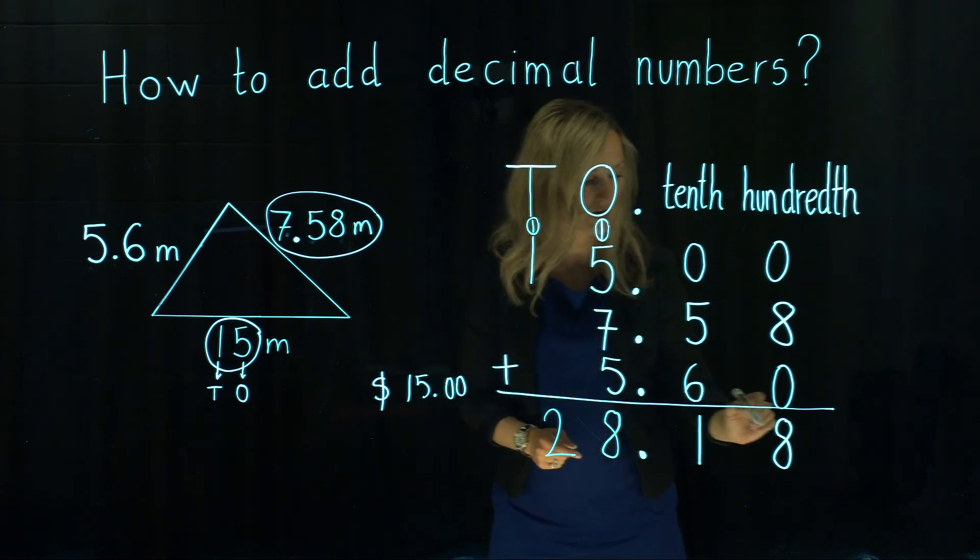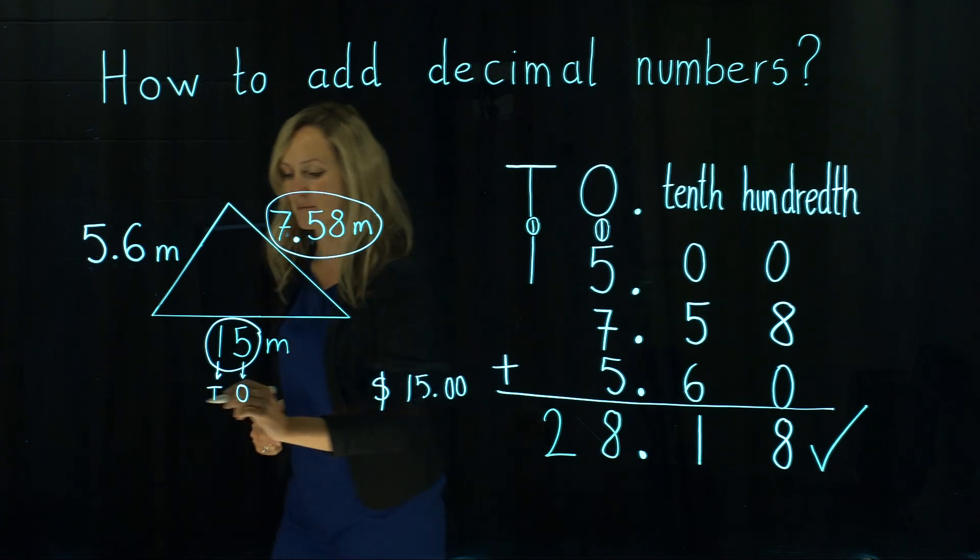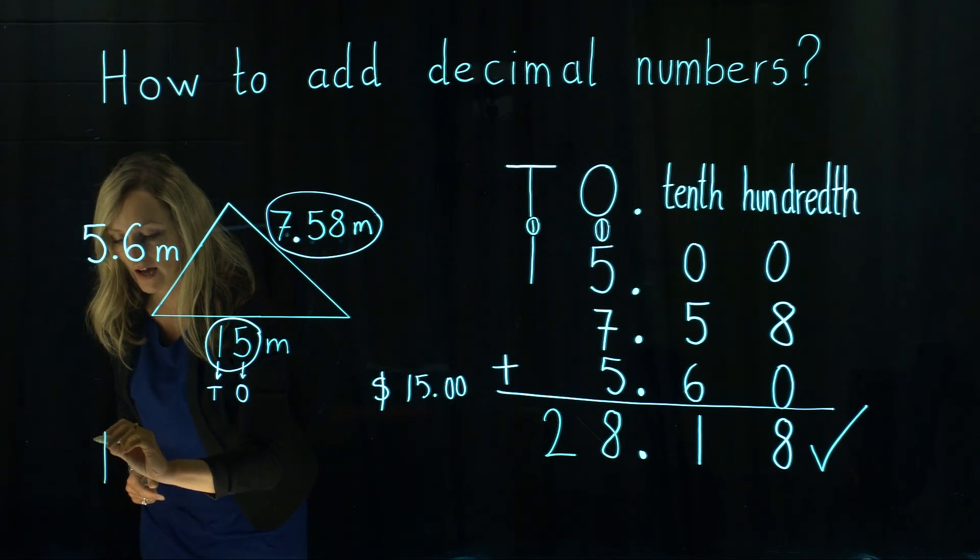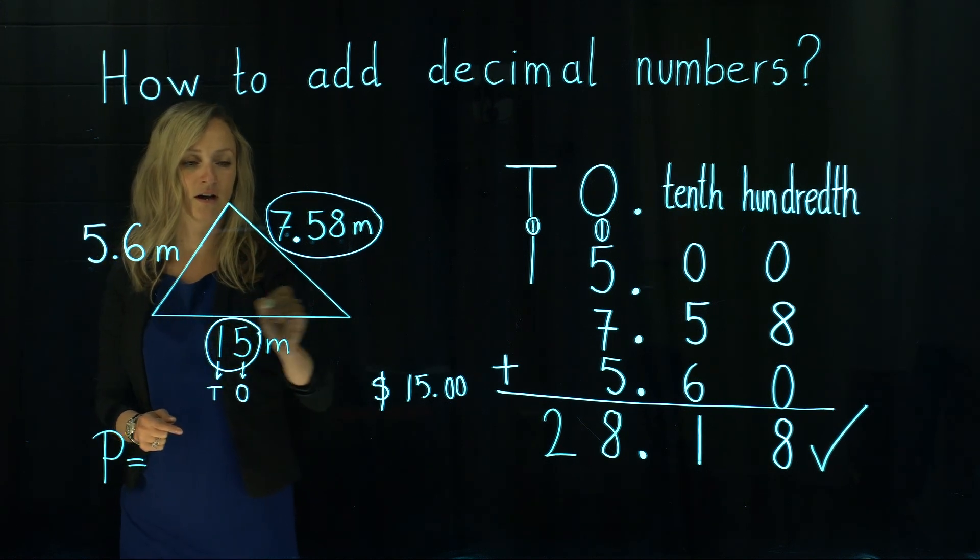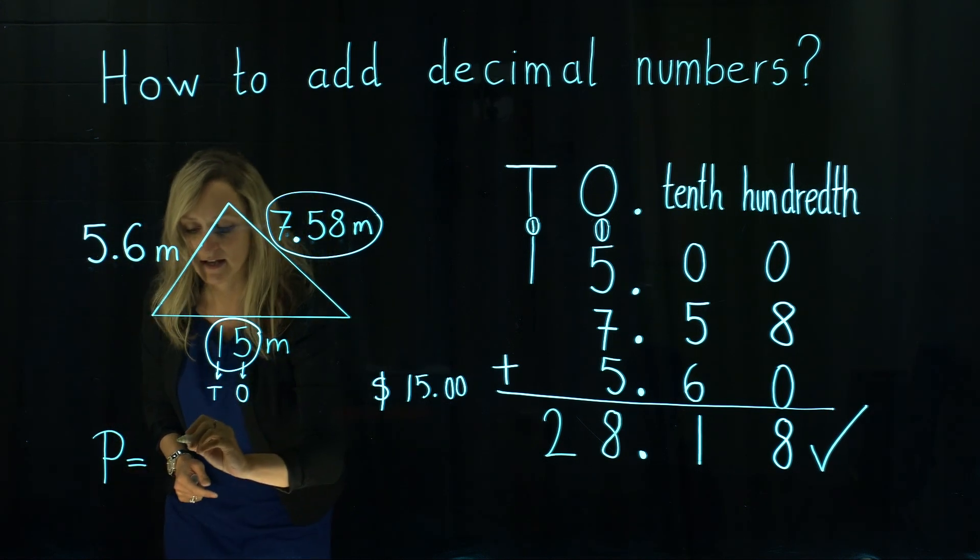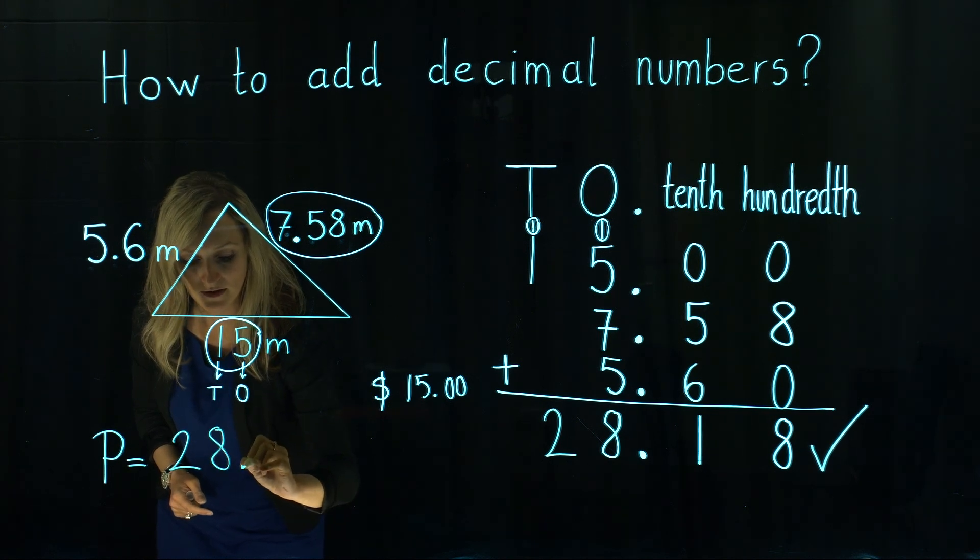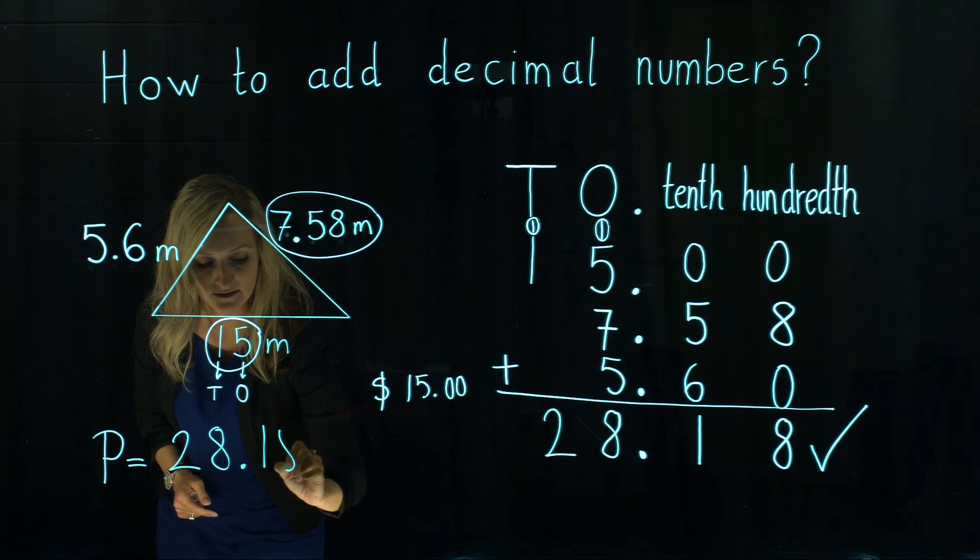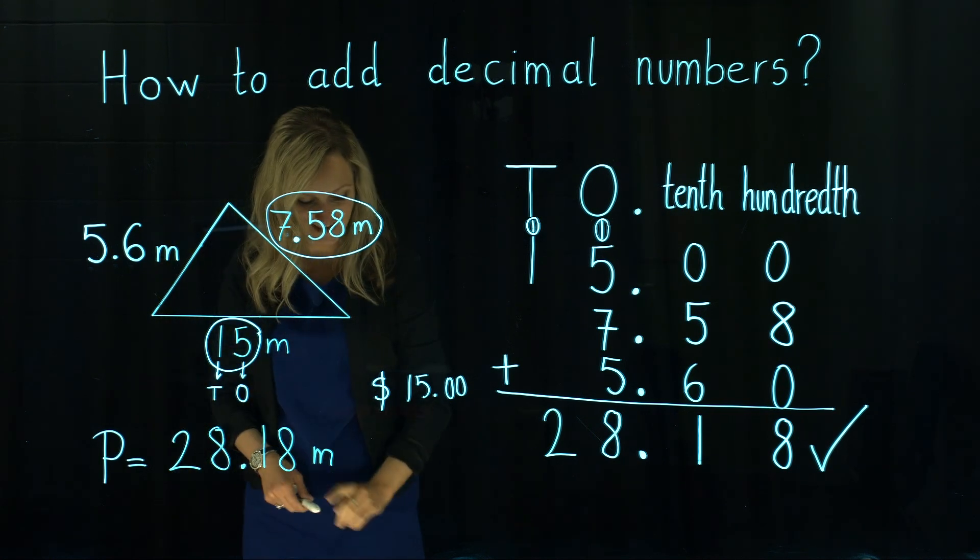So that's how we would add all those three numbers together and in our example perimeter of an ordinary triangle is 28.18 meters. Thank you for watching.